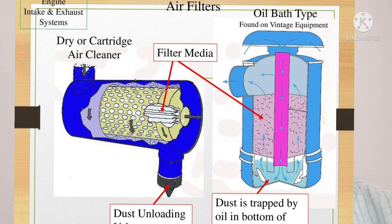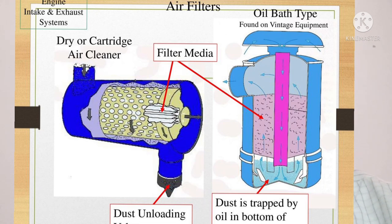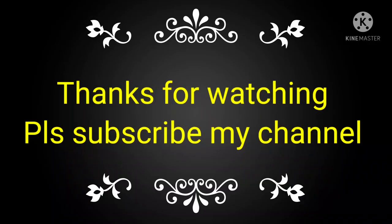When the dry type or cartridge type air cleaner becomes choked, it is removed and cleaned using air pressure. For the oil bath type air cleaner, the complete housing is removed, the lube oil is cleaned out, and a chemical cleaning agent is used to clean all the wire meshes of the oil bath type air cleaner housing. After cleaning, it is completely dried in sunlight or by other means, then fitted back on the engine so that fresh air can go to the combustion chamber.